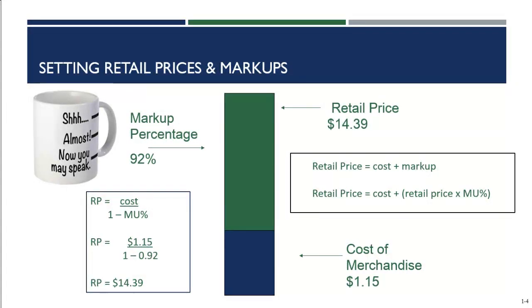This type of markup isn't uncommon. The next time you're at the beach or in a souvenir shop and you buy a fifteen dollar mug, it's interesting to think about — that retailer probably only paid about a dollar fifteen for that mug. But this isn't the final step in setting the price. We'll talk about a few other things that factor in: what happens if you put it on sale, what happens if it goes to clearance, what happens if it gets stolen. Generally speaking, based on cost and our average markup percentage, we should be setting our price at fourteen dollars and thirty-nine cents.